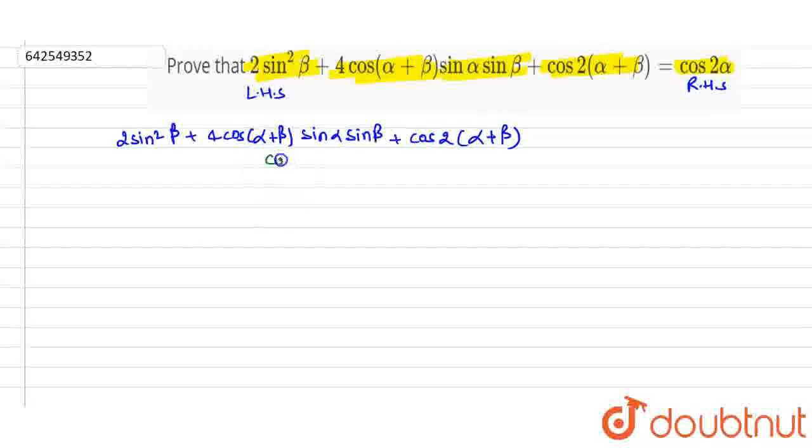we know that cos2θ = 2cos²θ - 1. At the place of θ, let's put α+β. According to this, cos2(α+β) = 2cos²(α+β) - 1.